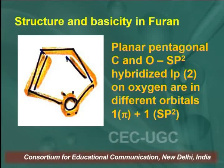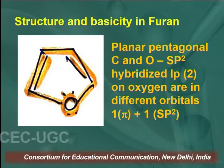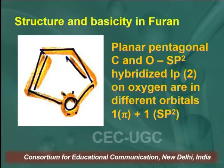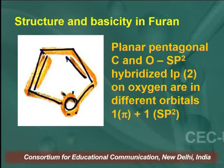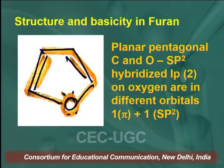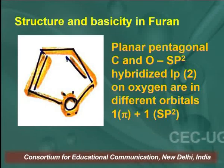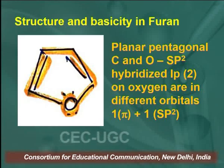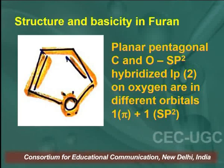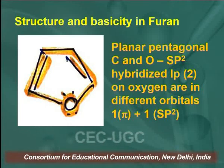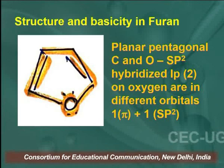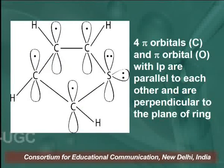Now we will discuss the structure and basicity of furan. If we look at the structure of furan, it is planar and pentagonal; carbon and oxygen are sp2 hybridized. Two lone pairs of electrons are present on the oxygen atom — one is bonding and another is non-bonding. One lone pair takes part in delocalization while the other lone pair remains in the sp2 hybridized orbital and does not take part in delocalization.